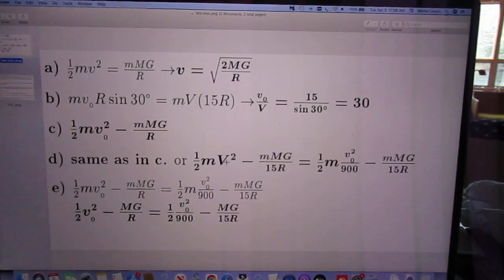It is one half capital V squared minus MMG divided by 15 R. And since you know that V0 over V is 30, you can also write it this way. Then you get a V0 square here.